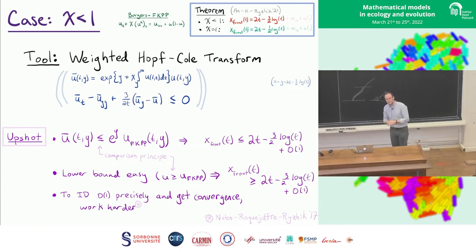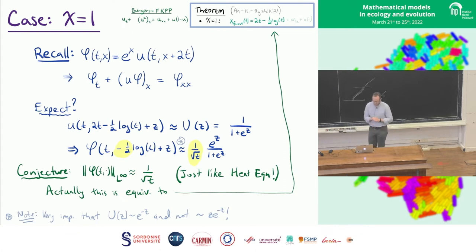So that gets you an upper bound on the front. To get a lower bound, it's sort of intuitively obvious. If you're adding an advection that pushes you forward, you can't go slower, right, because the advection's helping you. So then you get a lower bound on the front. That gets you up to the O of 1. If you want to get the precise things, you have to work a little bit harder. But as I said, you can use these ideas developed by Nolan Roquejoffre and Ryzhik. So that's chi less than 1. So that's nice. Finish with that. Two slides. So write two more slides for chi equals 1, and then we're done for the talk. Maybe. We'll see.